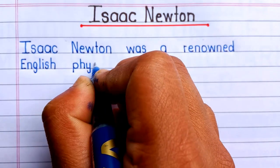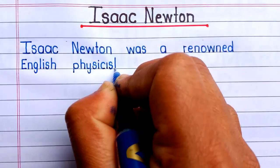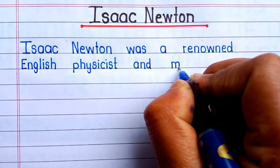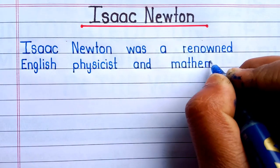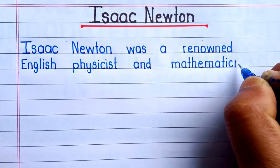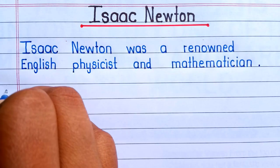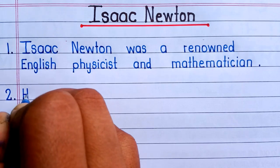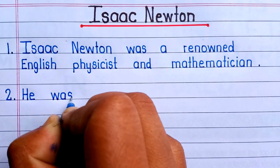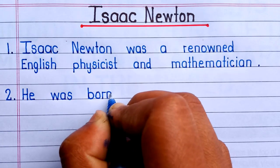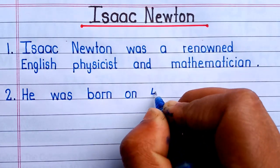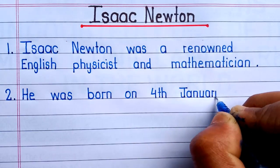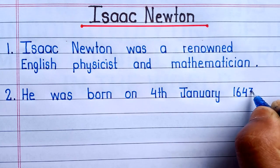Isaac Newton was a renowned English physicist and mathematician. Second line is, he was born on 4th January 1643.